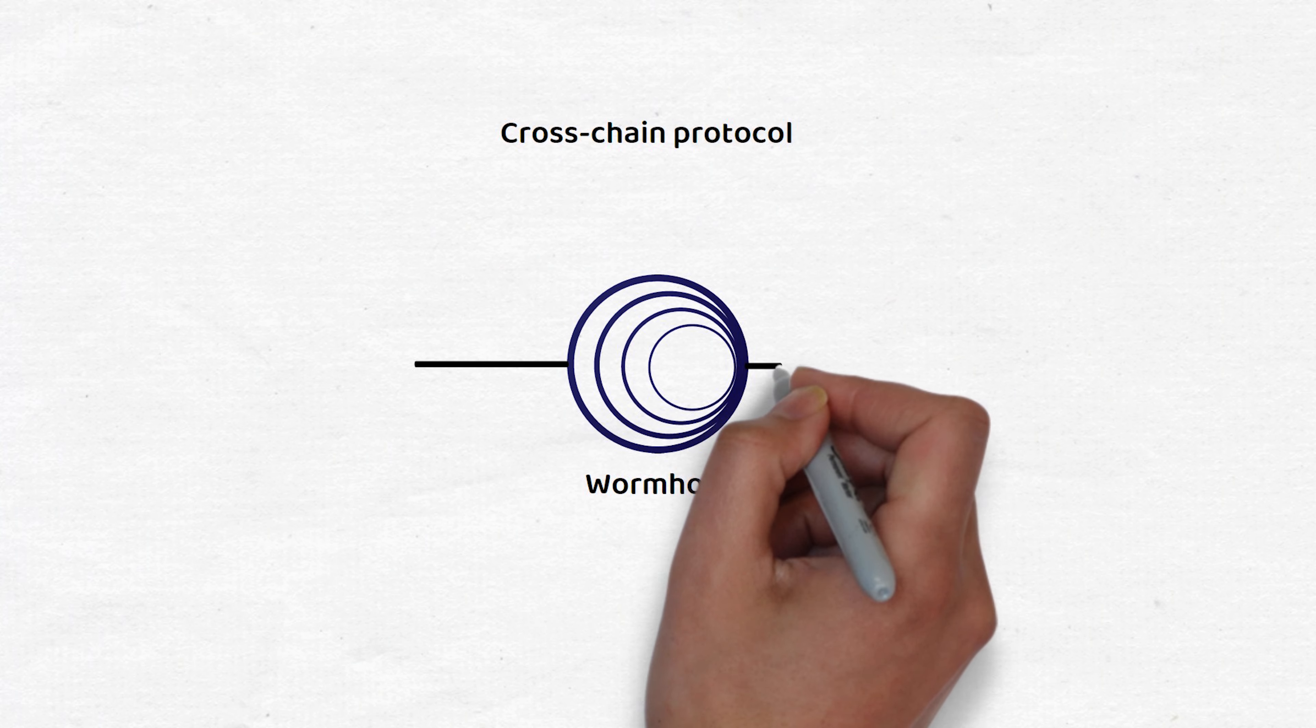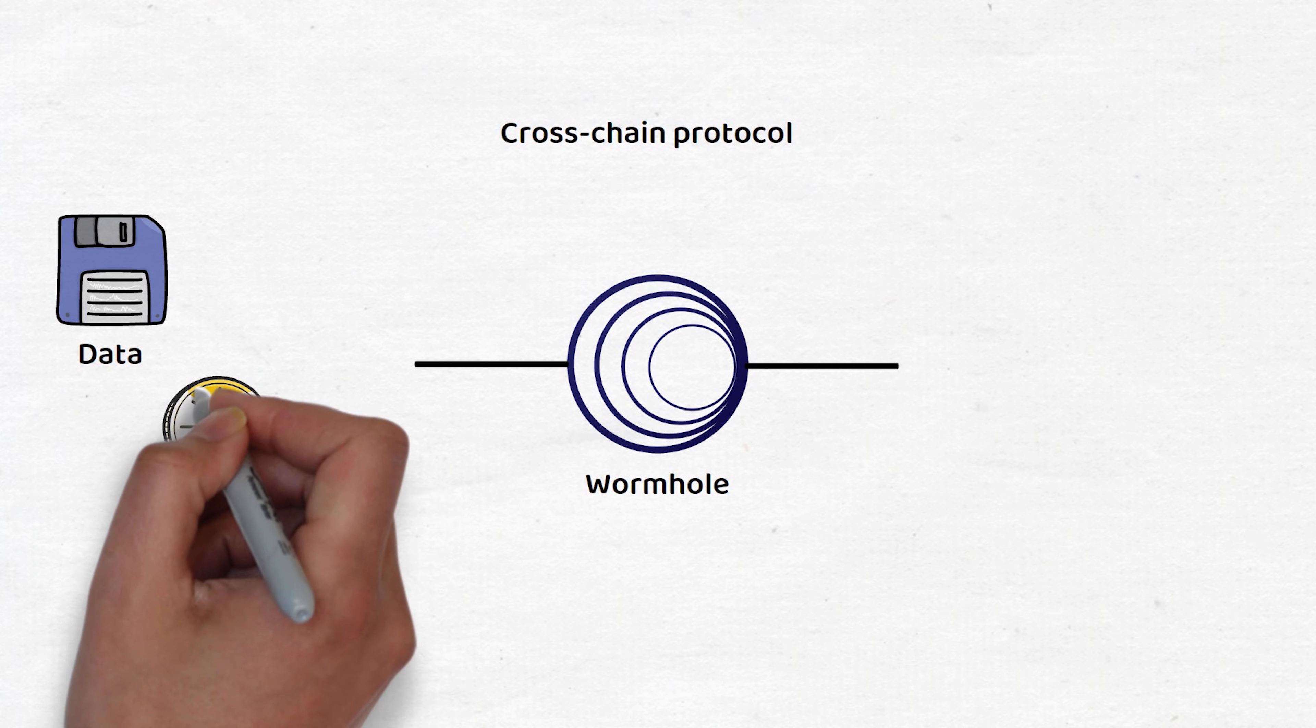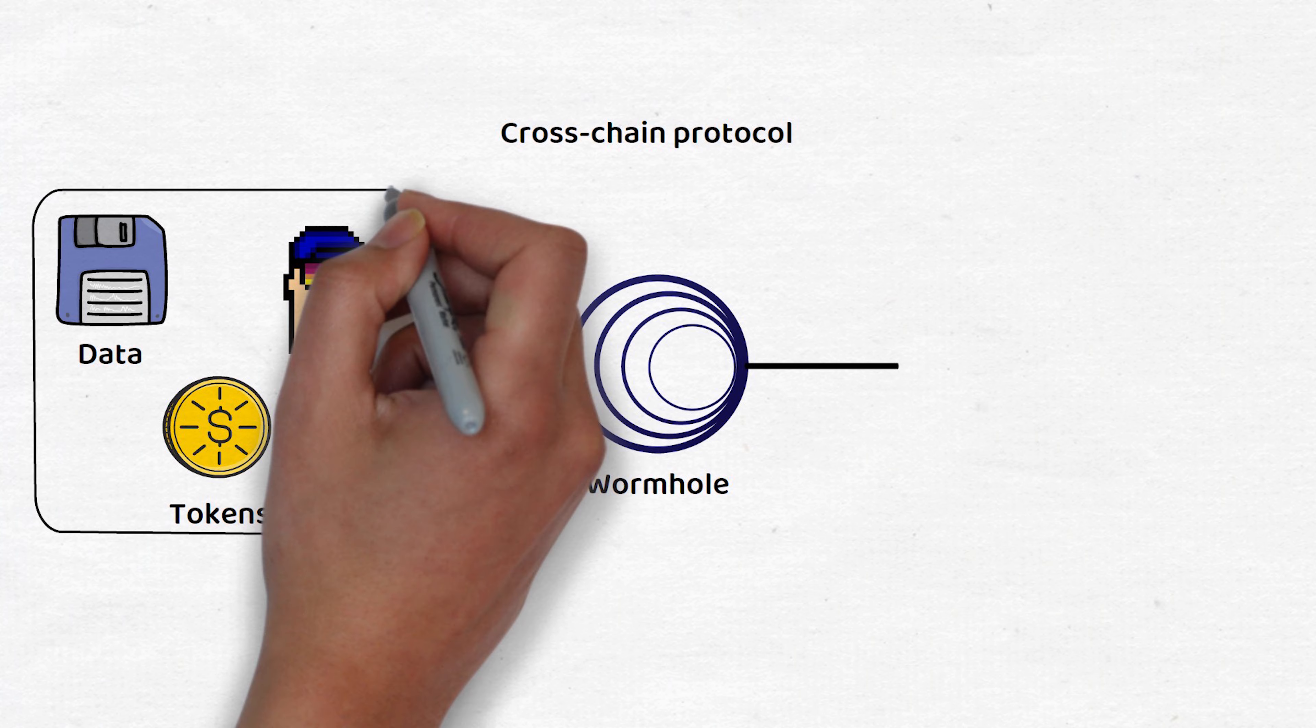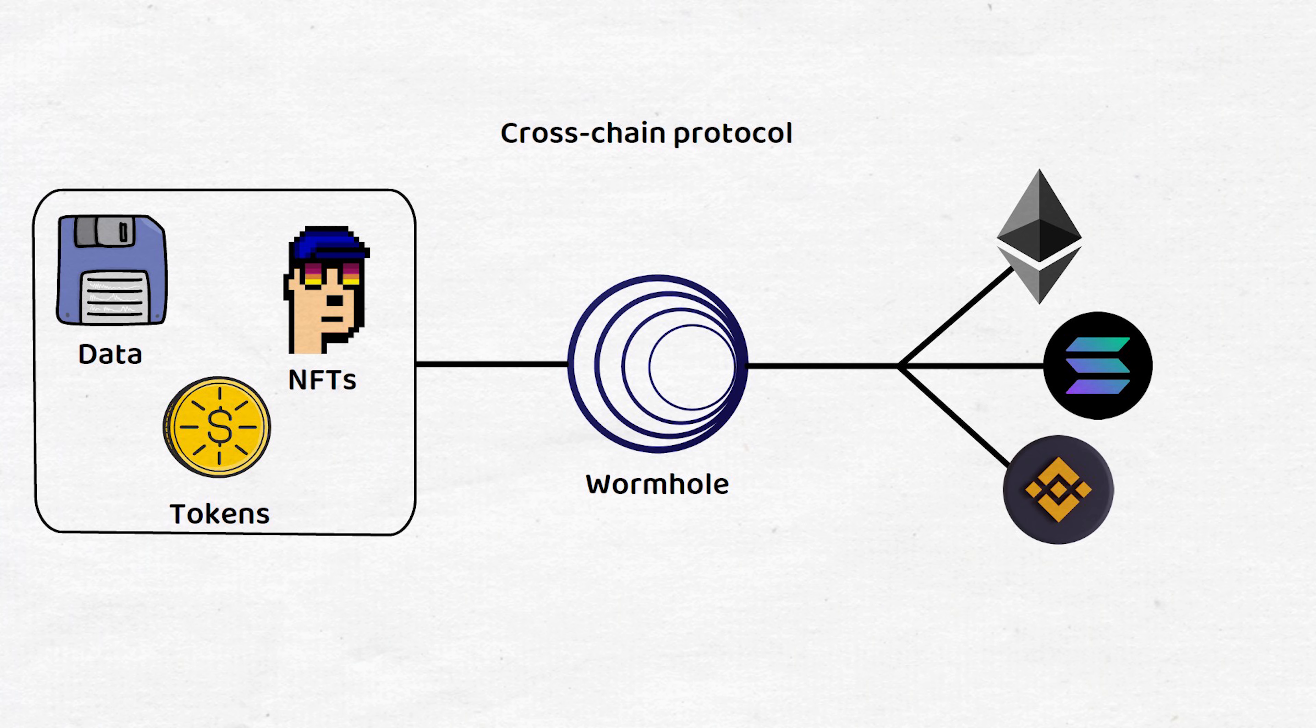Wormhole is a cross-chain protocol enabling the secure transfer of data, tokens, or NFTs across many top blockchains such as Ethereum, Solana, BNB, and more.